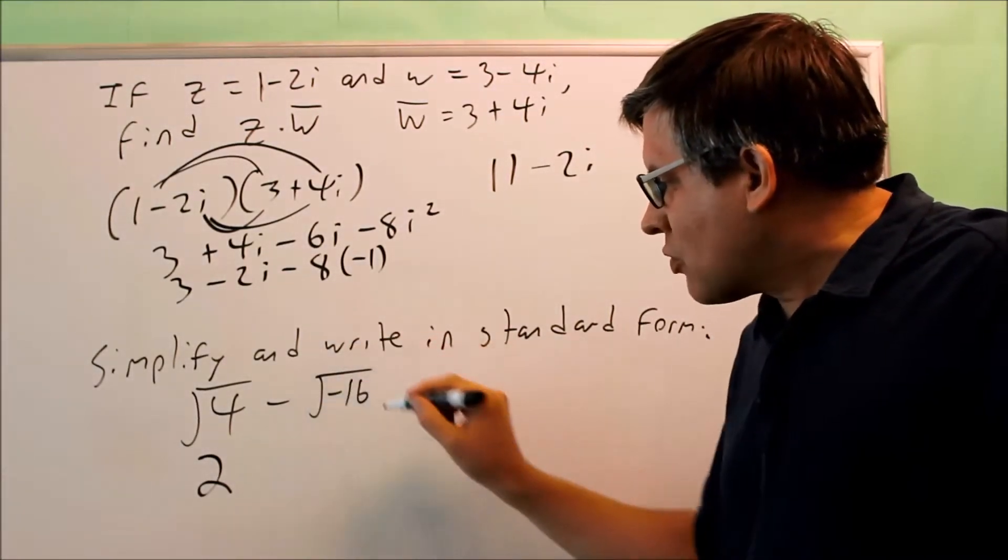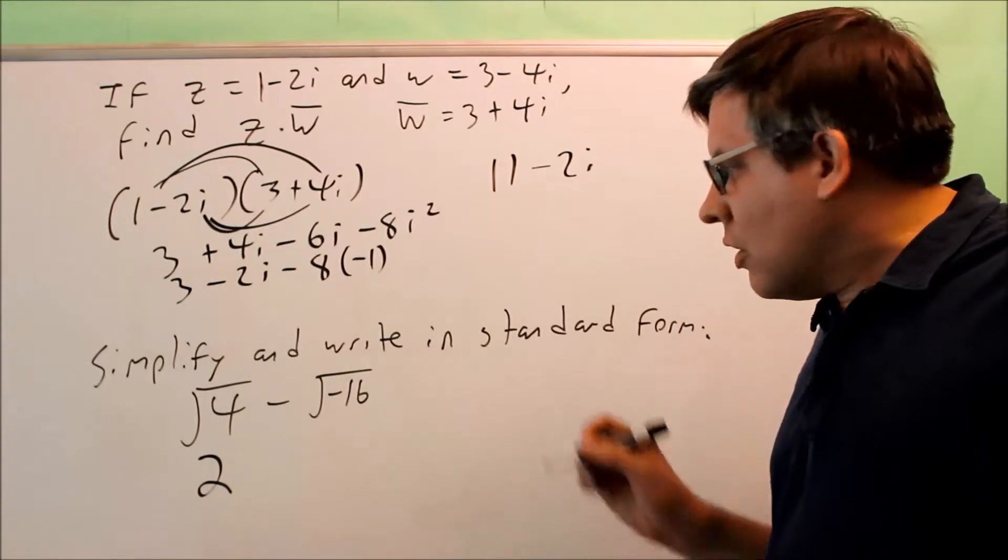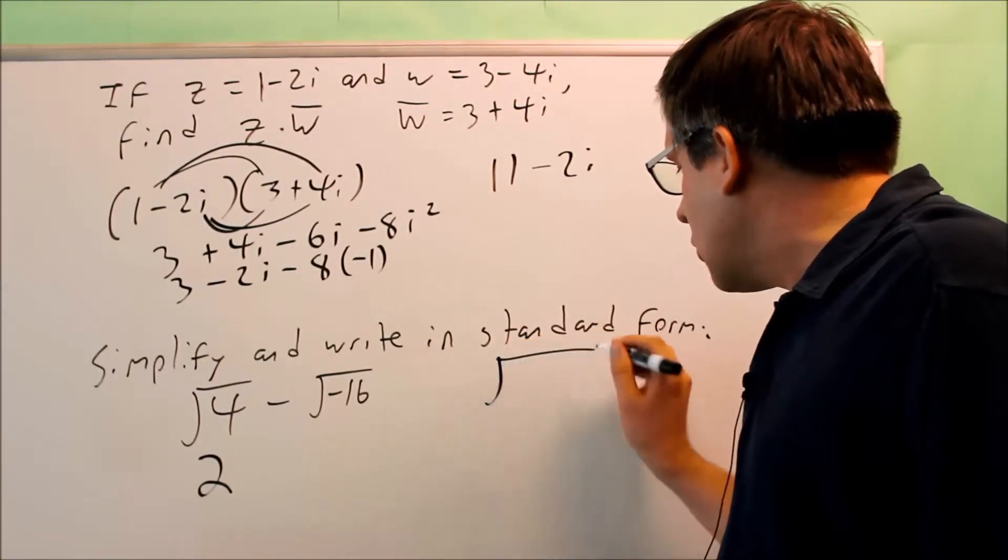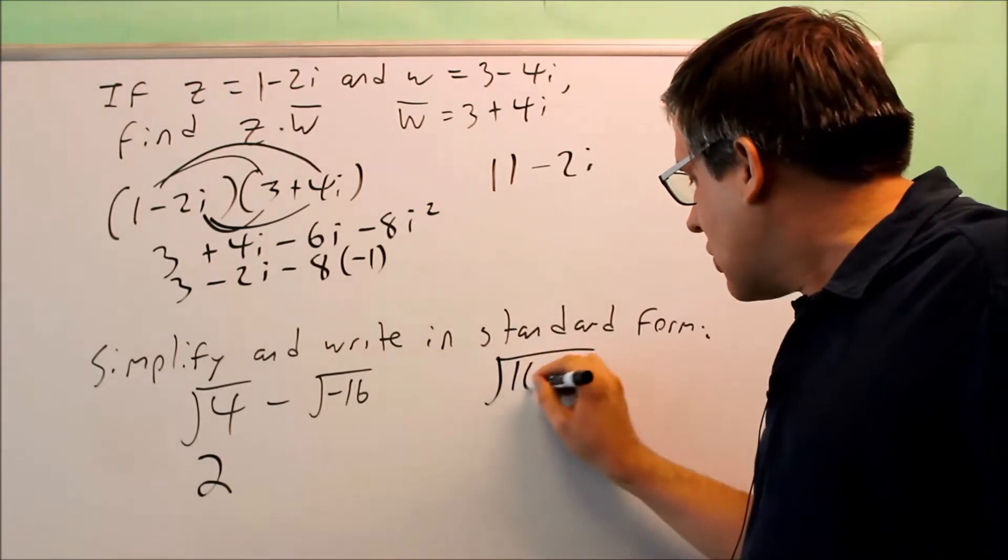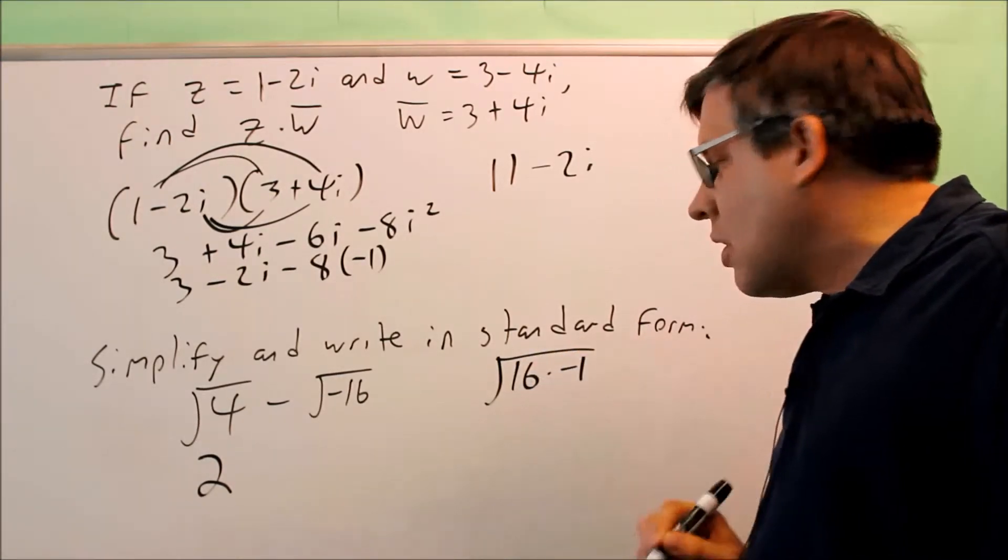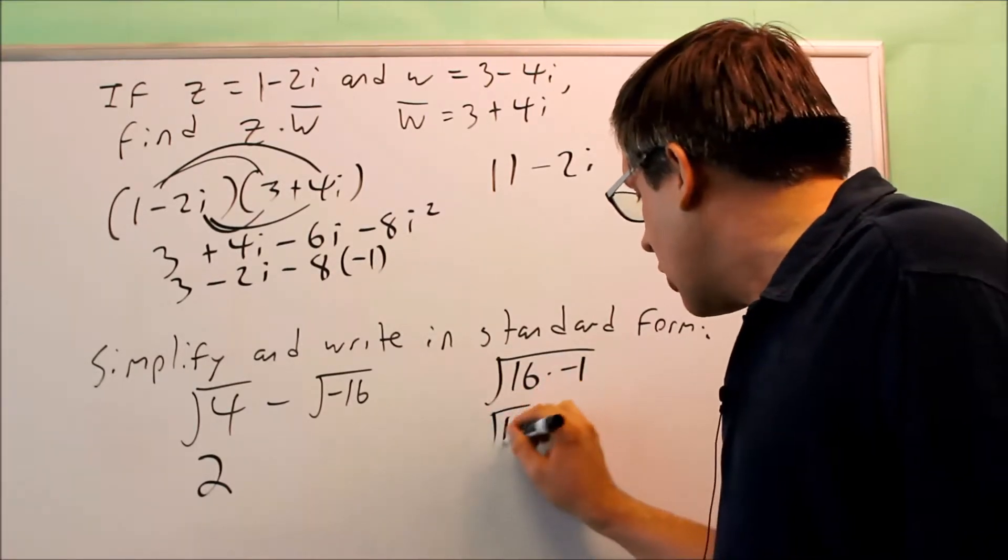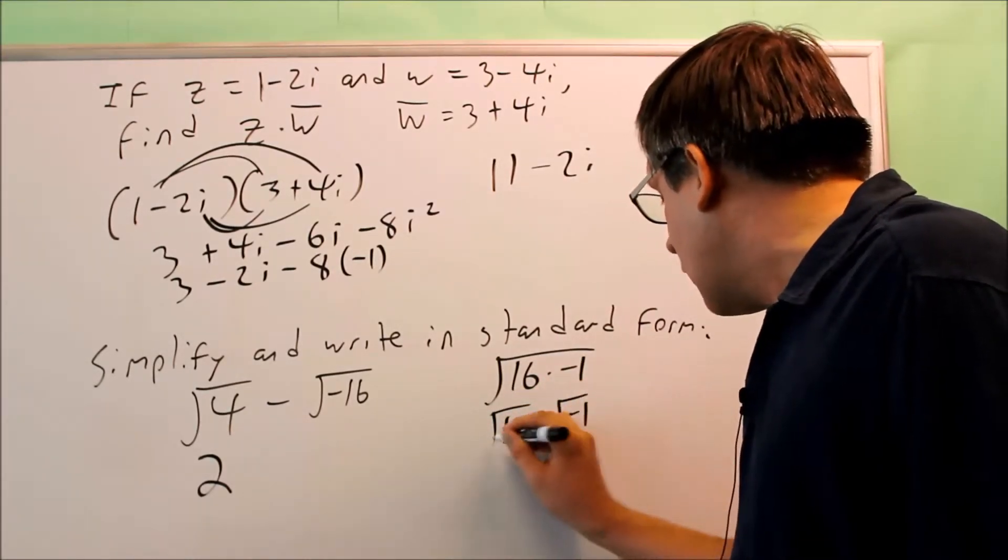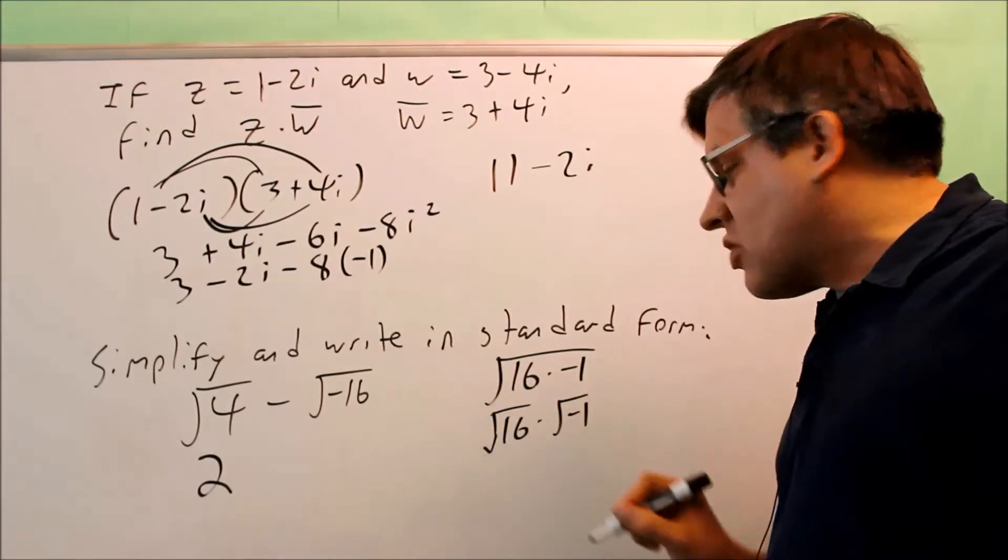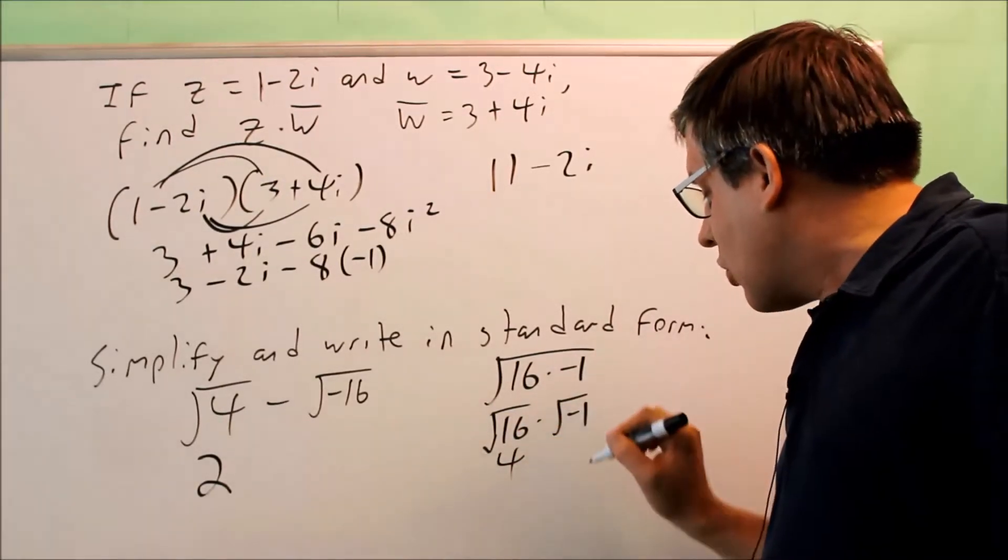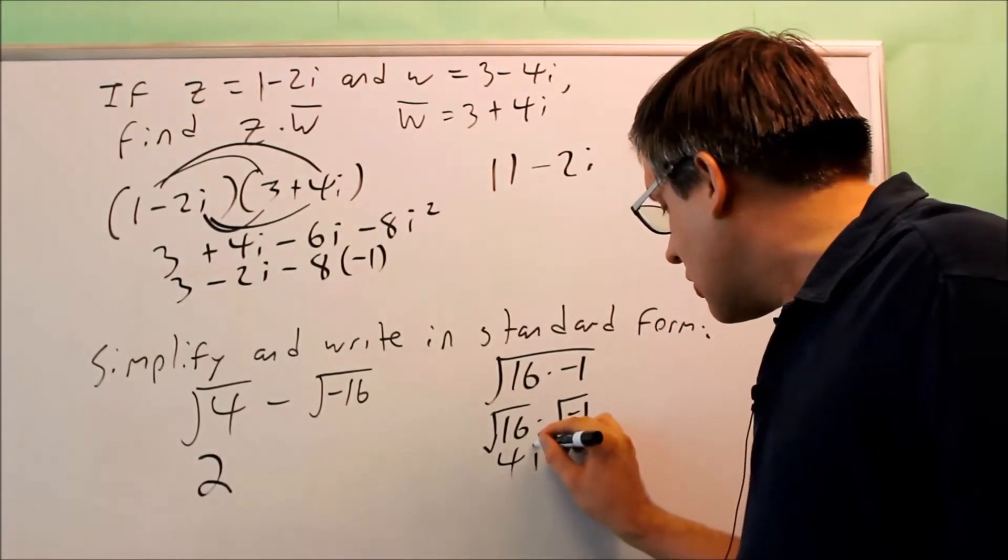But now we have to look at this one and see how we can break that down. Well, what that means, the square root of 16, I can actually rewrite that as 16 times negative 1 on the inside. I can break this up further and I can write square root of 16 times the square root of negative 1. Well, square root of 16, that's going to break down into 4. The square root of negative 1, that turns into an i.